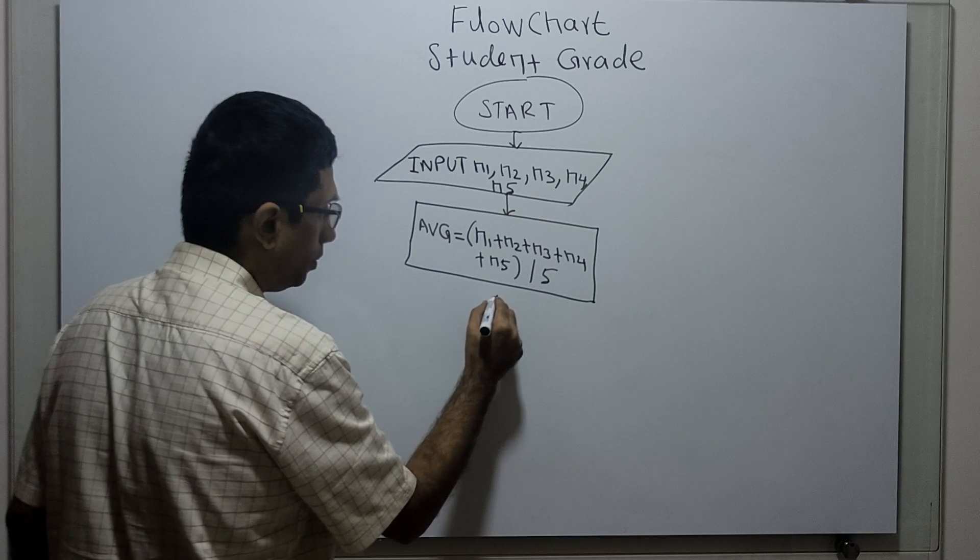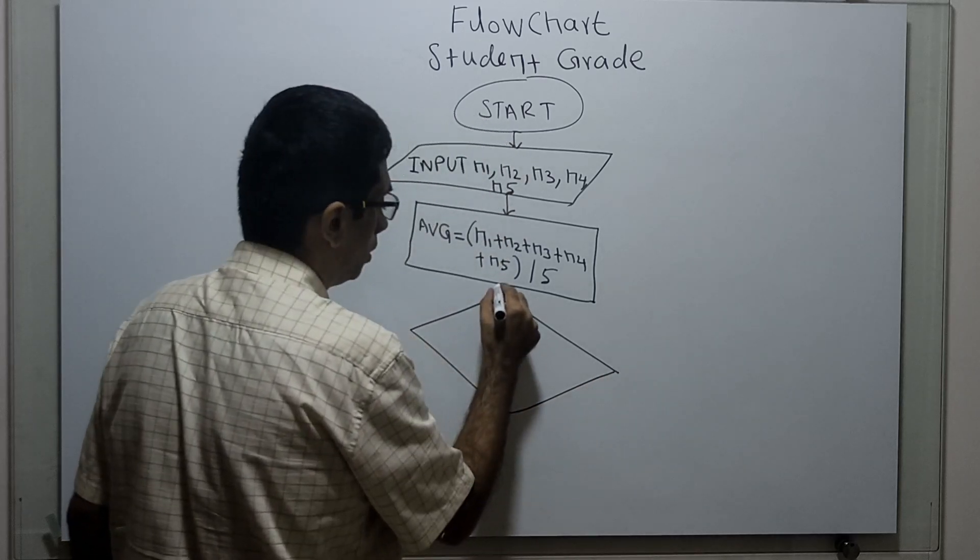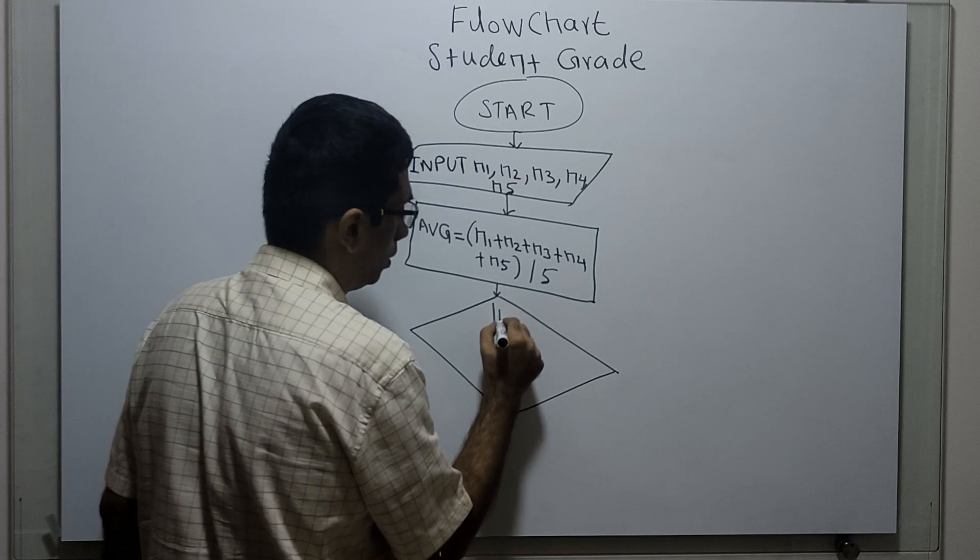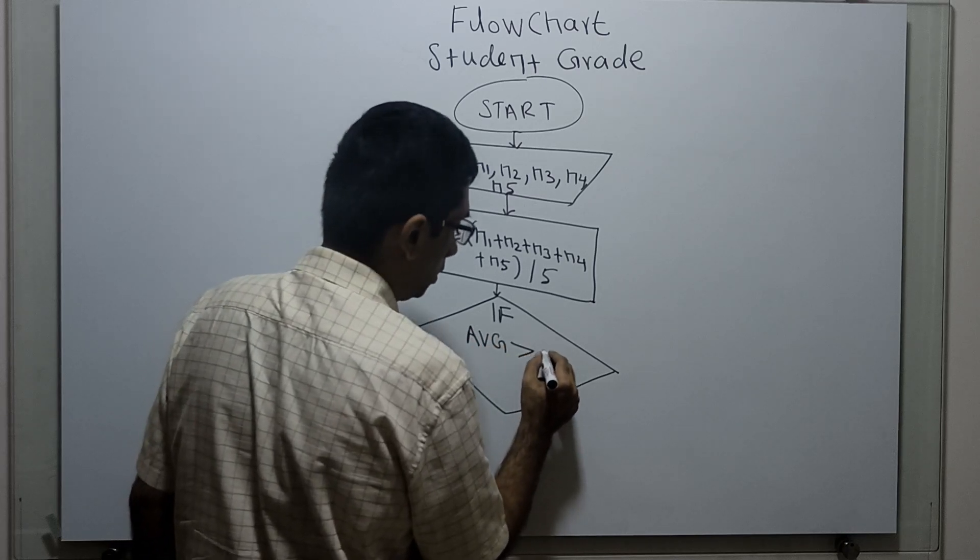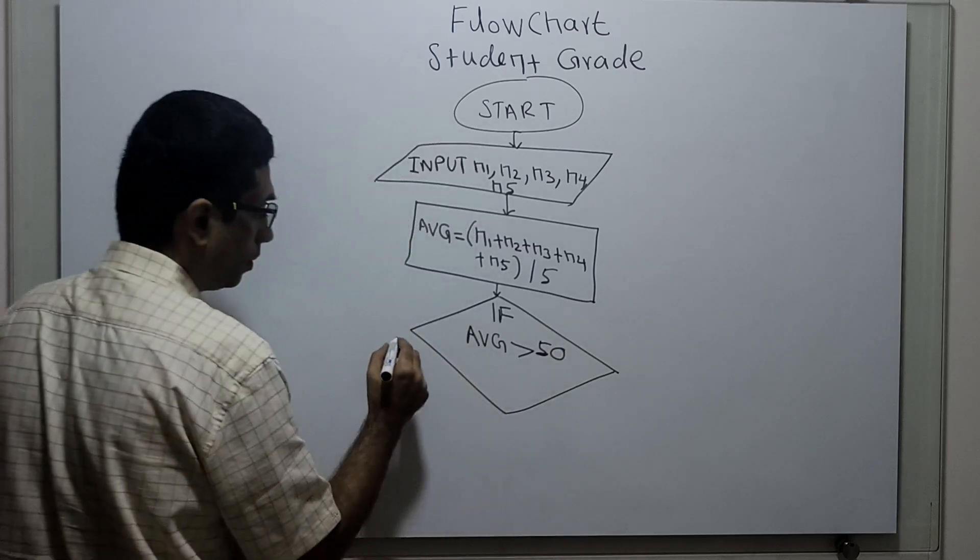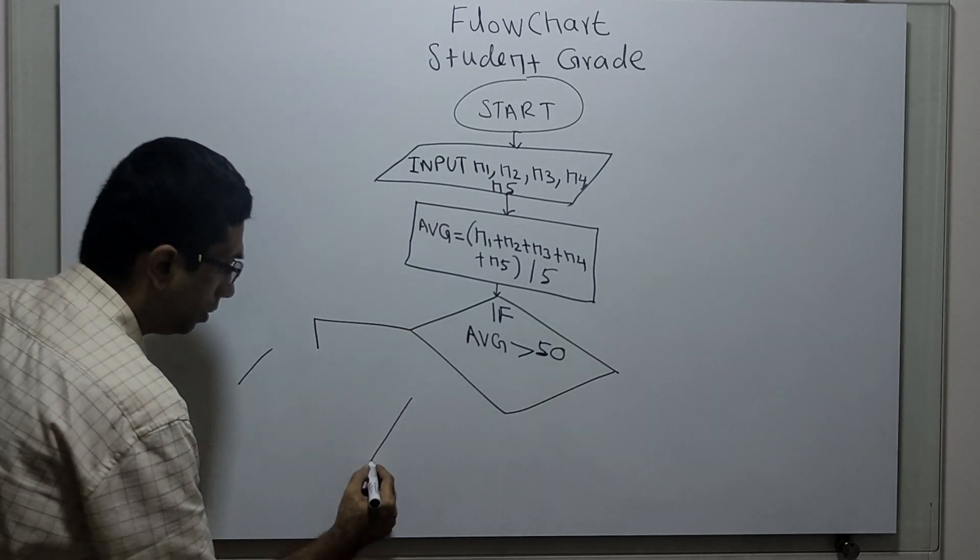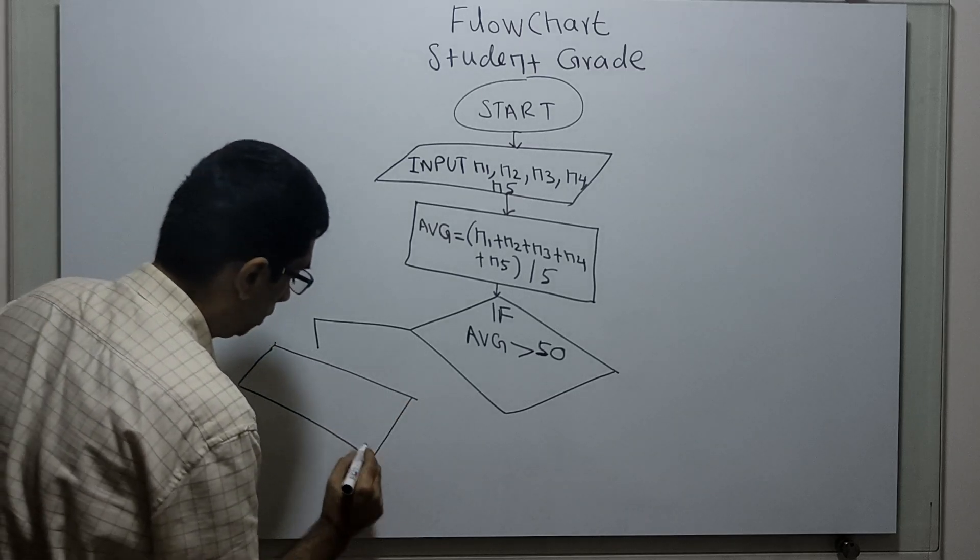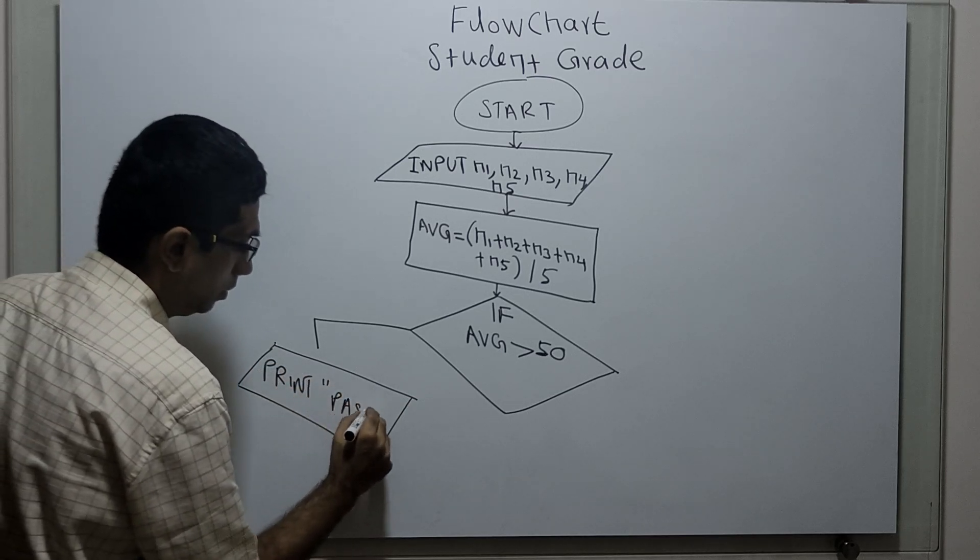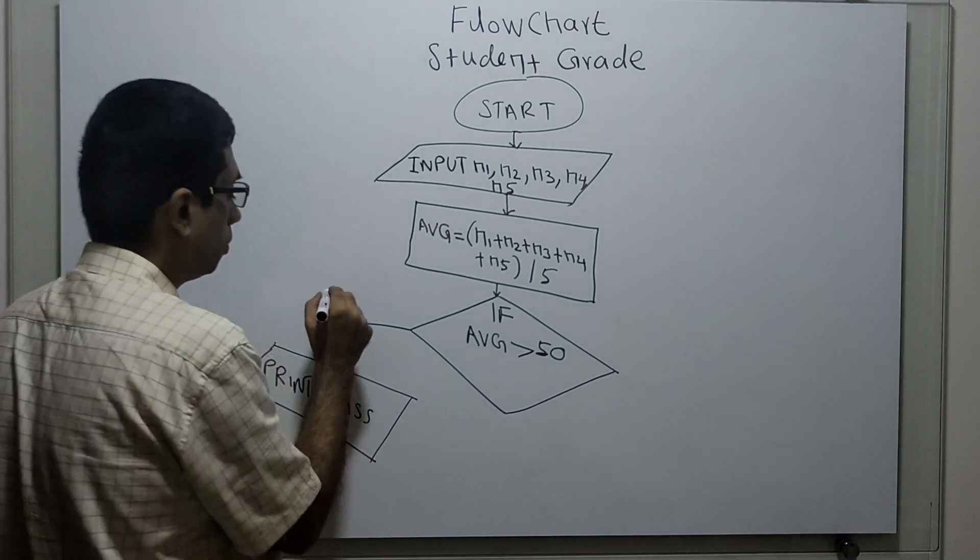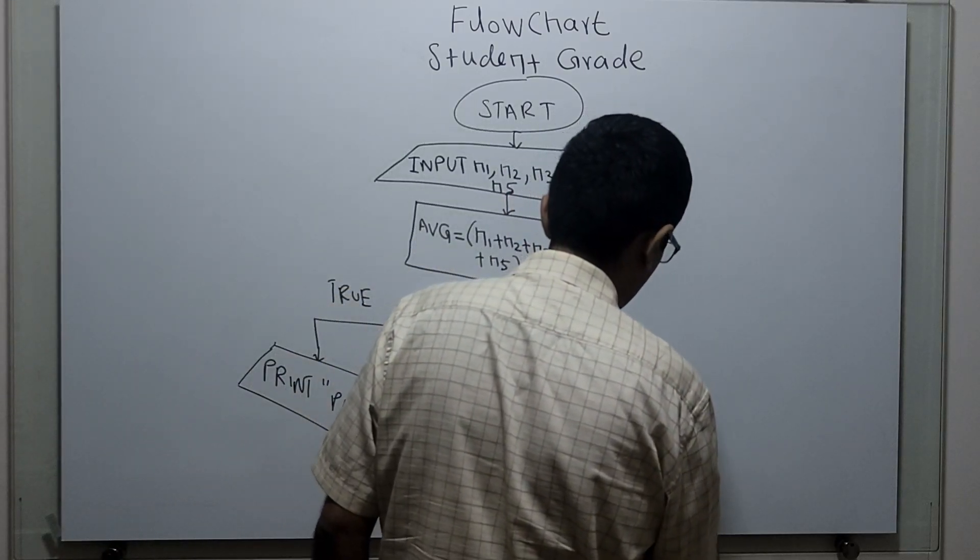I am checking if average is higher than 50. I am printing - if it is true, print pass. If average condition is false, in such a case print fail.